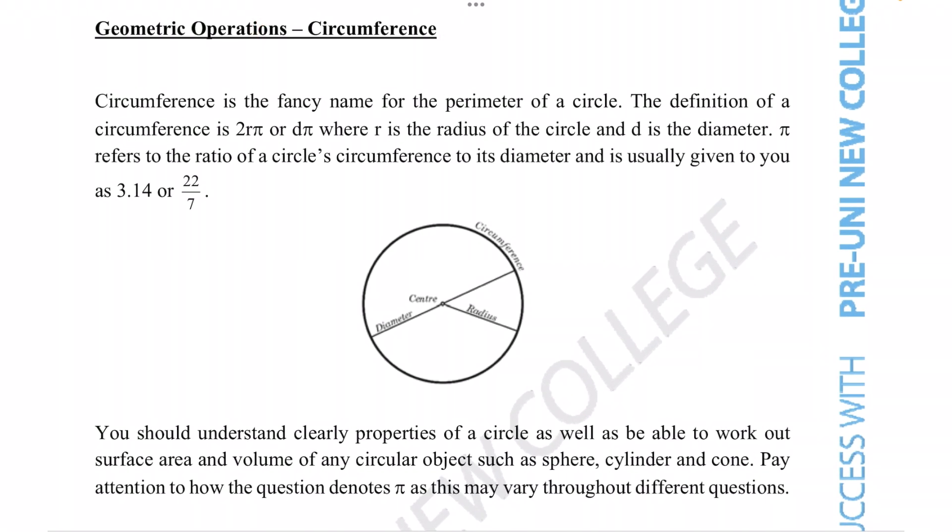Circumference is the fancy name for the perimeter of a circle. The definition of a circumference is 2πr or πd, where r is the radius of the circle and d is the diameter. Pi refers to the ratio of a circle's circumference to its diameter and is usually given to you as 3.14 or 22 over 7.